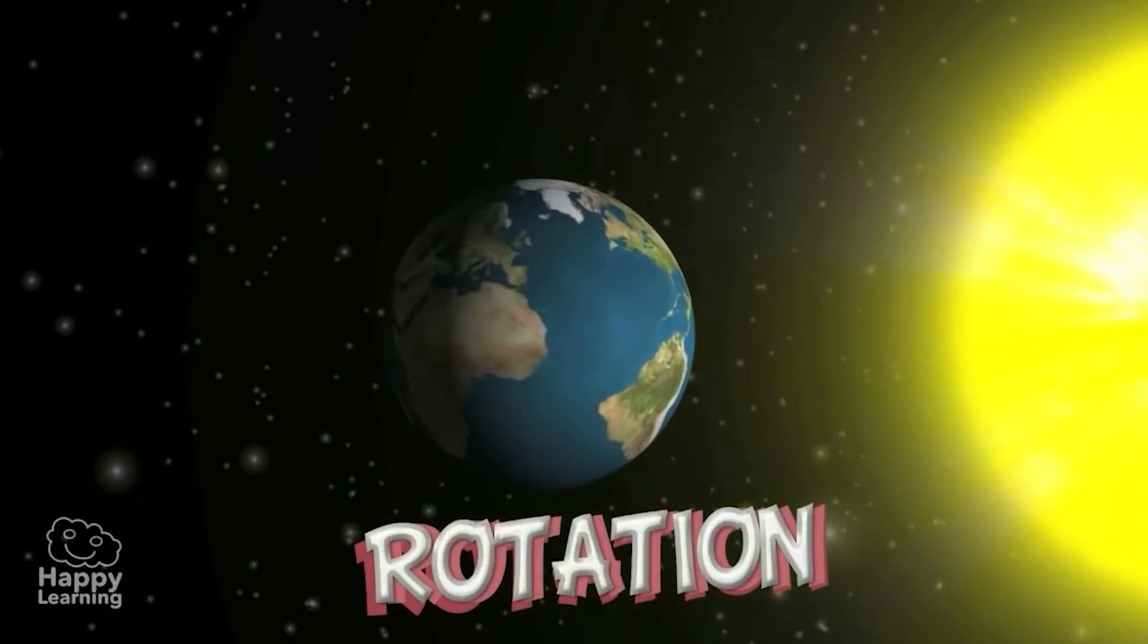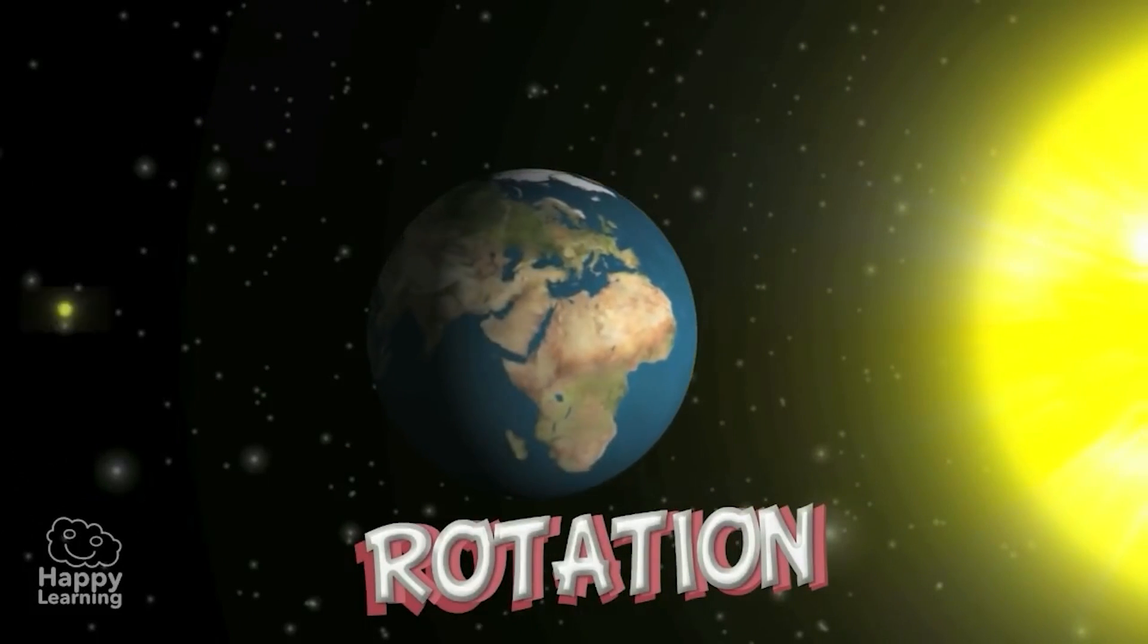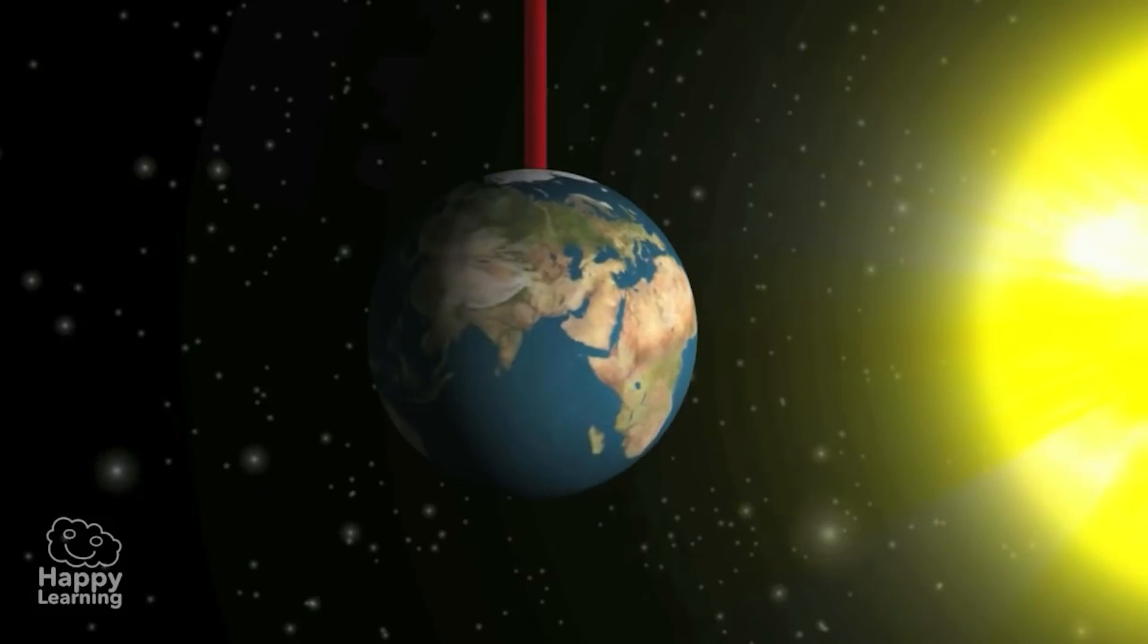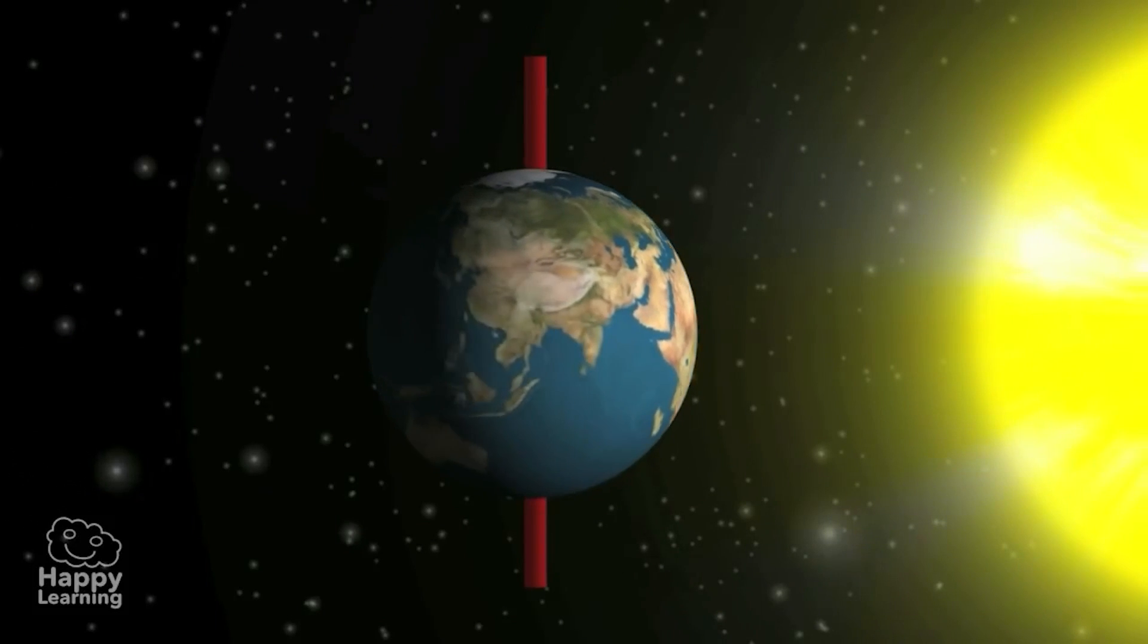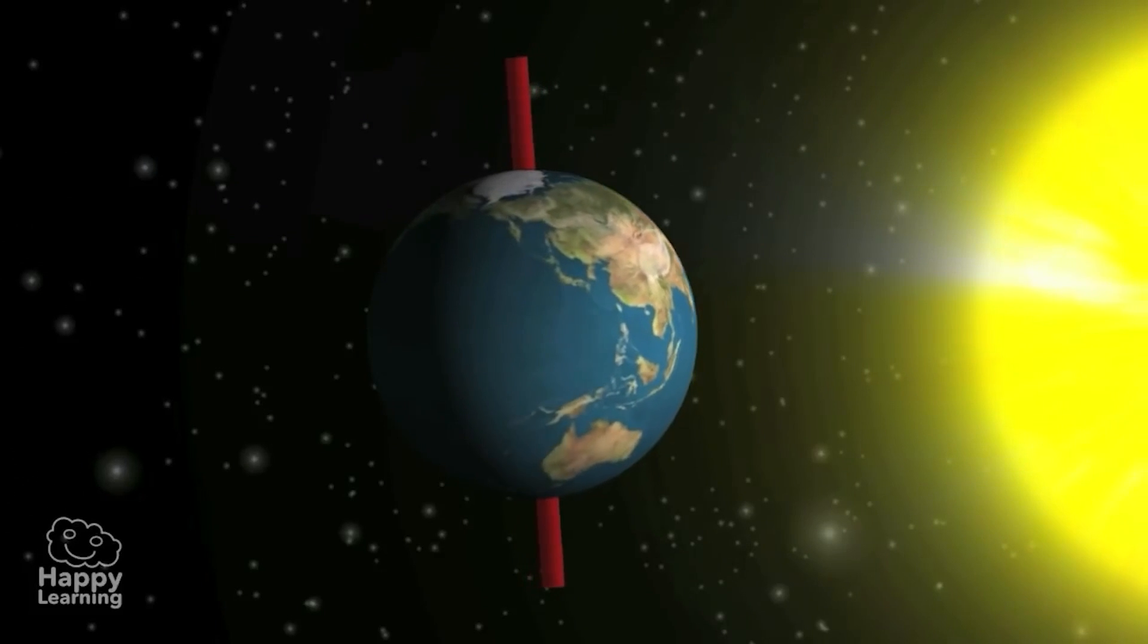Rotation is the movement of the Earth on its own axis. Rotate means to turn, so the Earth turns around a slightly inclined imaginary line that joins the two poles called the axis.